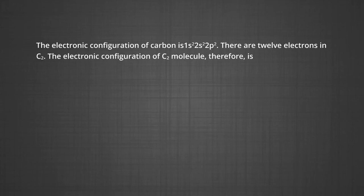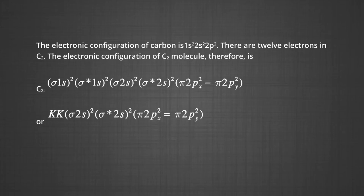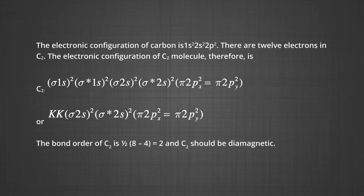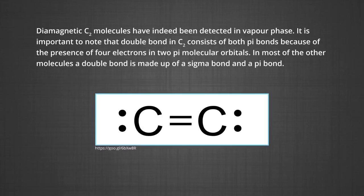The fourth example is the carbon molecule. The electronic configuration of carbon is 1s², 2s², 2p². There are 12 electrons in the carbon molecule. The bond order of C₂ is ½(8 − 4) = 2, and the carbon molecule should be diamagnetic. Diamagnetic C₂ molecules have indeed been detected in the vapor phase. It is important to note that the double bond in C₂ consists of both pi bonds, because of the presence of 4 electrons in the two pi molecular orbitals, whereas in most other molecules a double bond is made up of a sigma and a pi bond.